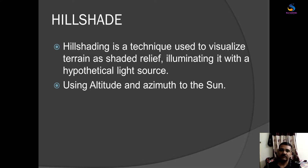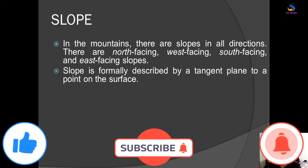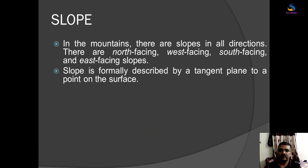Now we will proceed to slope. In a mountain there are slopes in all directions — steep slopes and low slopes. They can be north facing, west facing, south facing, and east facing. Slopes can be in any direction, including northeast. Slope is formally described by a tangent plane to a point on the surface.